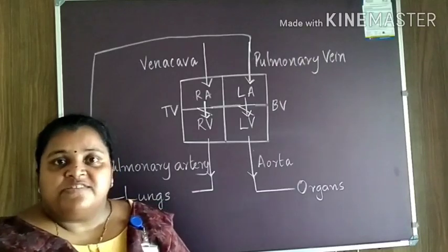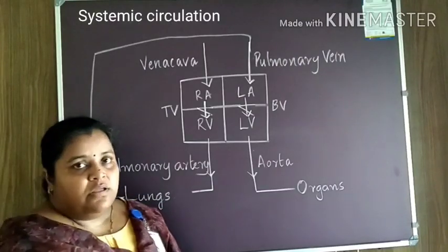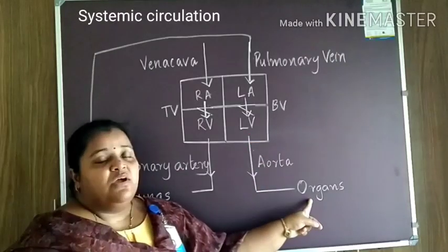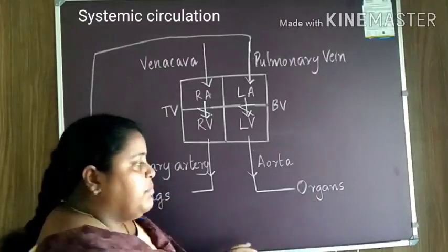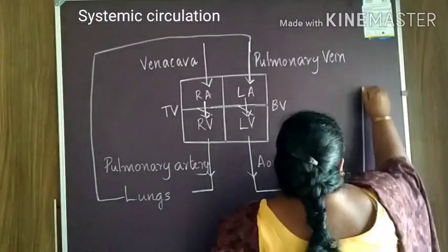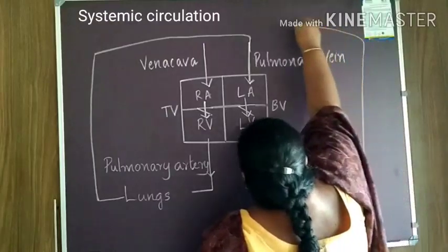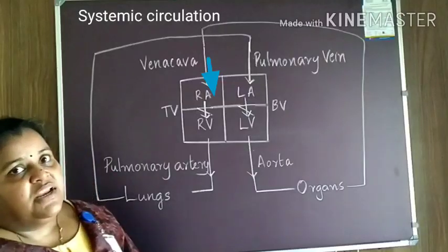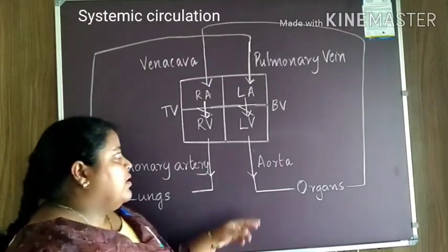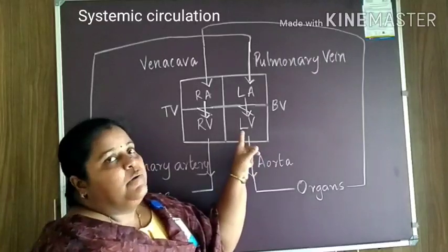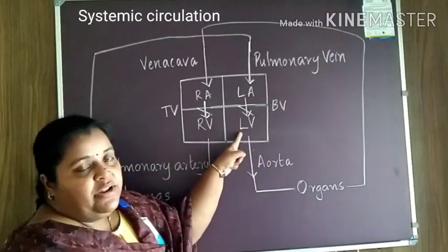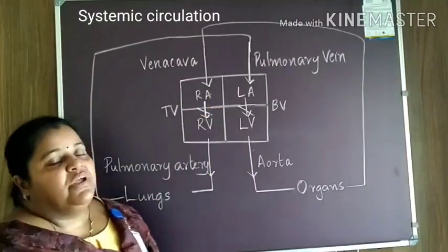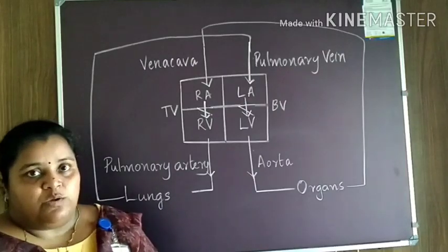The second type of circulation is known as systemic circulation. Here, the aorta carries the pure blood to different organs of the body. From there, the impure blood is carried by the vena cava to the right atrium. So, the circulation that begins from the left ventricle and ends at the right atrium is known as systemic circulation.